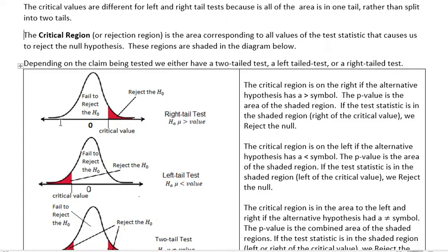So here is a right tail test. That means that our alternative hypothesis is saying go to the right. And we have a critical value here. And this part, the shaded part, is the part where we would reject the null. And anything over to the left of that, we would fail to reject the null. In other words, kind of supporting the null, right?